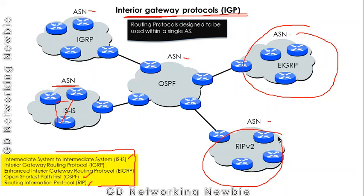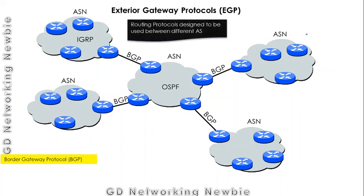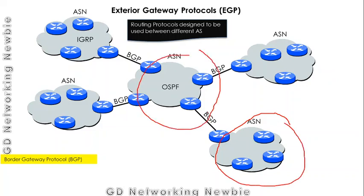Interior gateway protocols are designed to be used within a single autonomous system. Exterior gateway protocols, on the other hand, are protocols used between autonomous systems. The routers connecting different autonomous systems use exterior gateway protocols for routing between those systems.